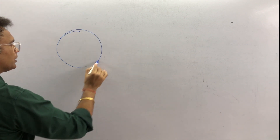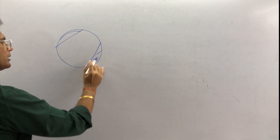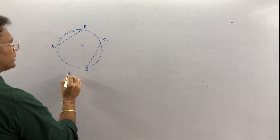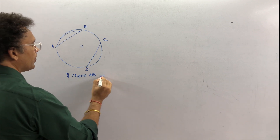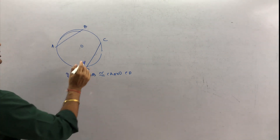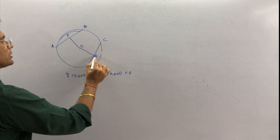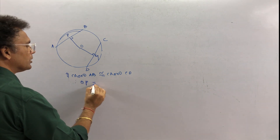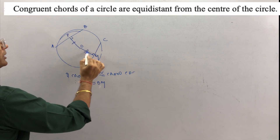Now we have a circle with congruent chords. We draw chord AB and chord CD. This is your center O. If chord AB is congruent to chord CD, then this distance — marked as P and M — is perpendicular from the center. Therefore, OP is equal to OM. That means if chords are congruent, then the distances from the center are the same.